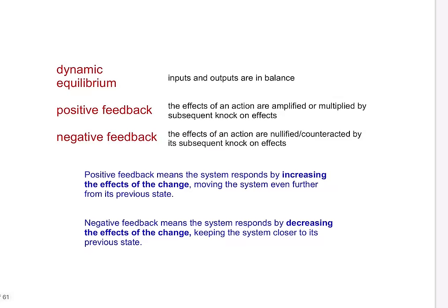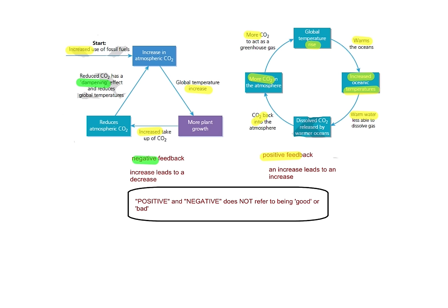In practice, positive feedback exacerbates the change and creates a new equilibrium, as shown in the diagram. Negative feedback nullifies the change, trying to restore equilibrium — highlighted in green on the diagrams. These are nice recaps of things you've likely covered in class; pause if you need to.